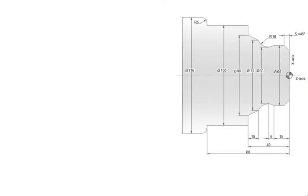Today we are going to learn about a turning program. The symbol is given here, so we have to start the program from here. In case the symbol is given here, you have to start the program from this point itself — this is the starting point. We have to draw the line; this point is 0,0. This is plus X, minus X, plus Z, minus Z.